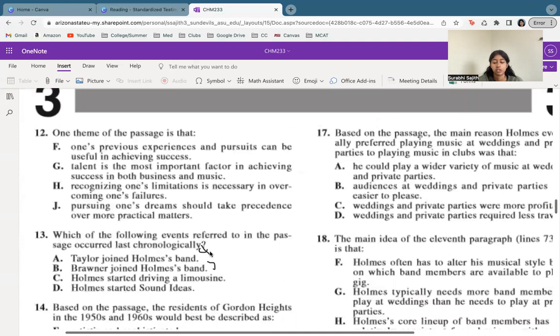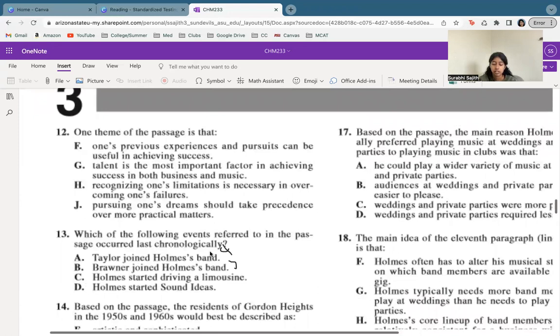Now let's look at number 12, one theme of the passage. So again, let's think about what we kind of saw throughout this passage and then let's do some process of elimination. In this case, it isn't easy to just guess what the theme they're talking about is. So let's look at what they're offering as options. So let's go backwards. Pursuing one's dream should take precedence over more practical matters. That's not true.